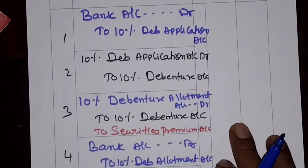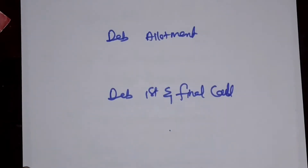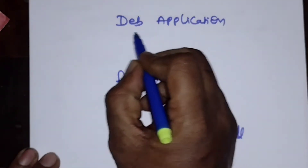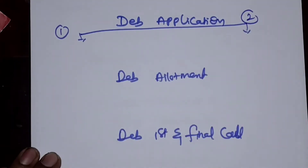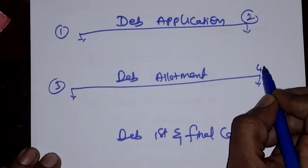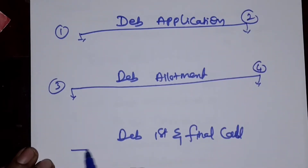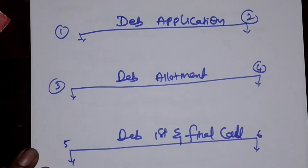I have posted the journal entries already — all six of them. Now I am going to show you how these six journal entries appear. For application we need to pass journal entries 1 and 2; for allotment we need journal entries 3 and 4; and for first and final call we pass journal entries 5 and 6.